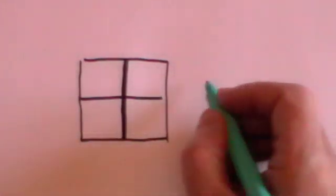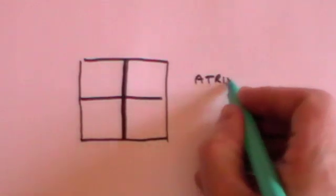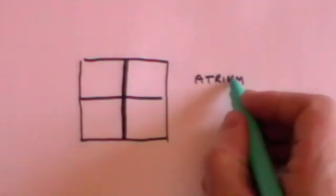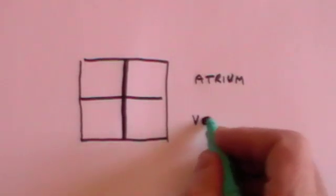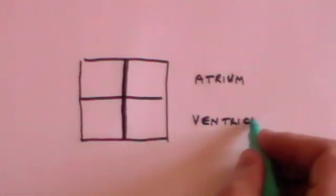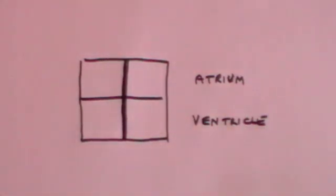The top half is called the atrium and the bottom half is called the ventricle, and you have a left and a right ventricle. But when you draw a picture of the heart it's always the other way around.